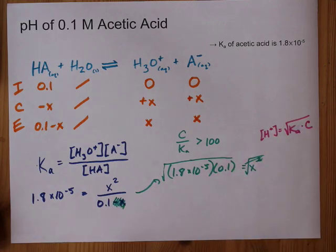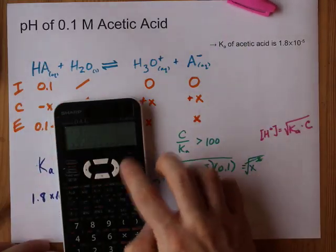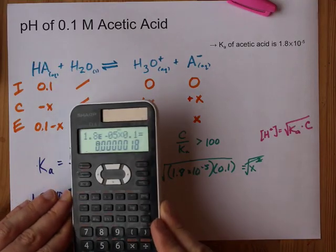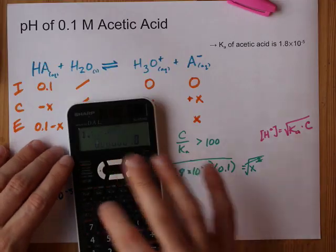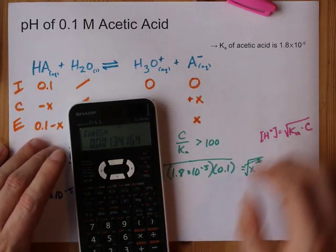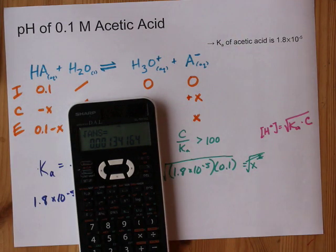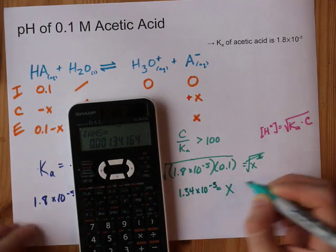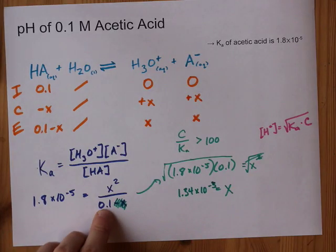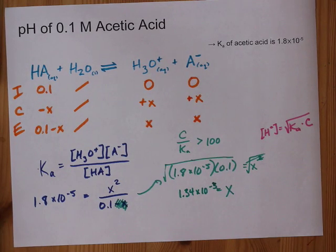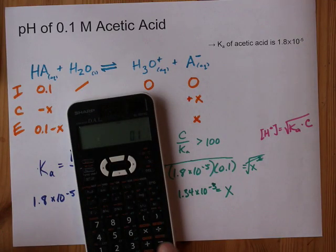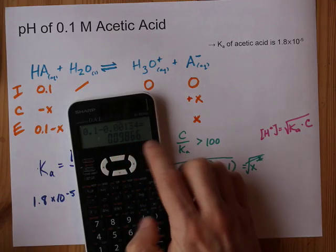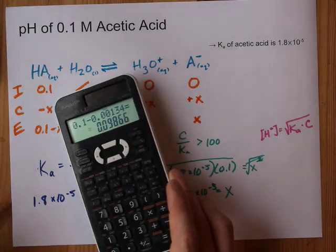Let's do that now. 1.8 times 10 to the negative 5 times 0.1 gives me 1.8 times 10 to the minus 6. When I square root that answer, the calculator gives me X — which is H+ — equal to 1.34 times 10 to the negative 3. Is that much lower than 0.1? Yes it is. 0.1 minus 0.00134 is 0.09866, which is so close to 0.1 that we can treat them as the same.